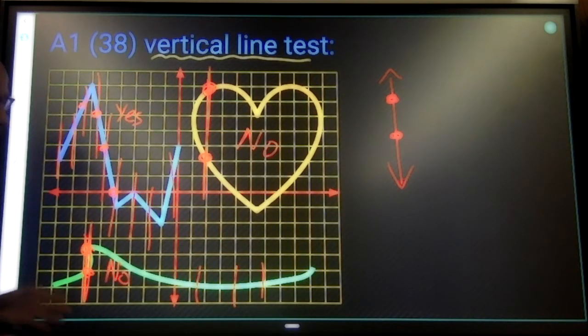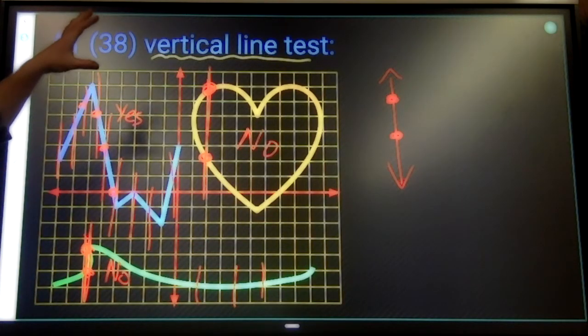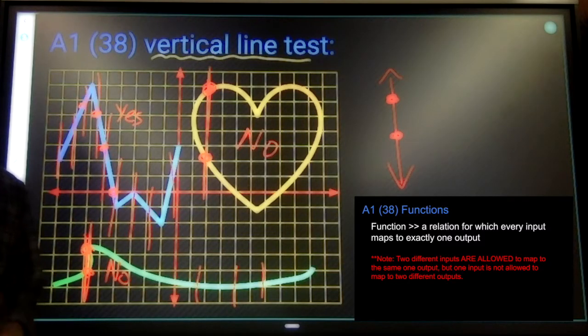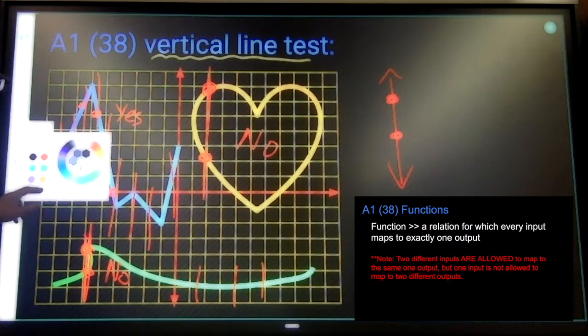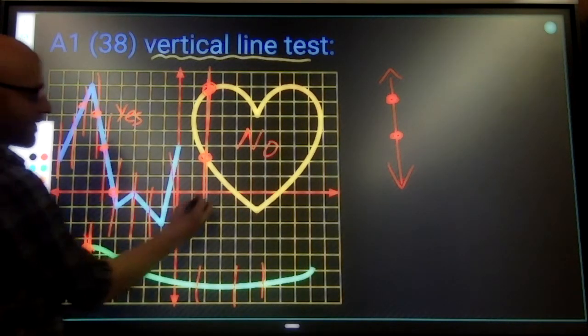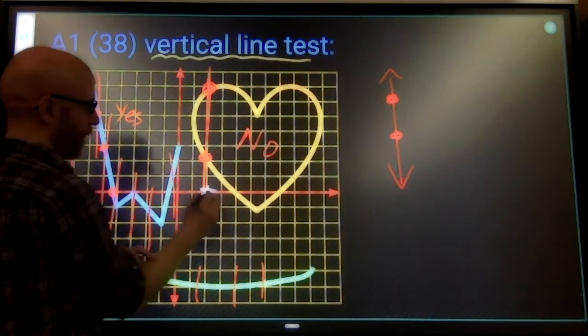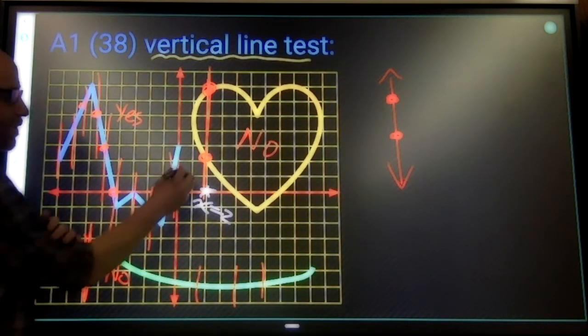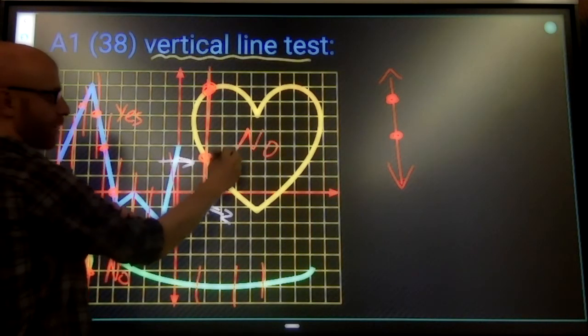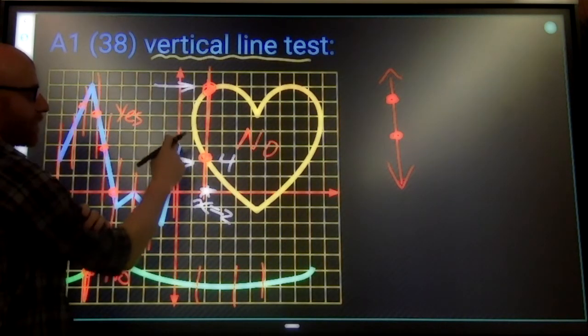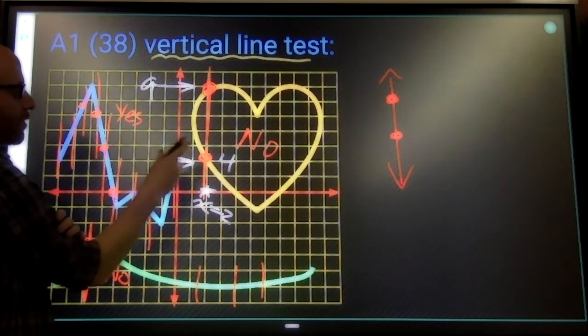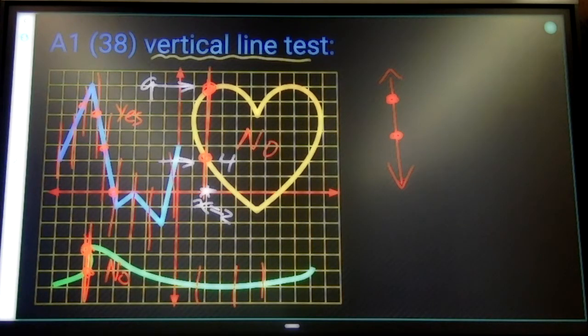What that means in the context of the definition of function, remember, definition of function said for every input, there's exactly one output. And remember, what are our inputs? Our inputs are our x values. So when x equals two for the heart, what does y equal? y equals four or it equals nine. y equals four or nine. So that's where it becomes a problem.